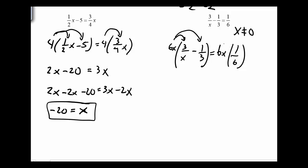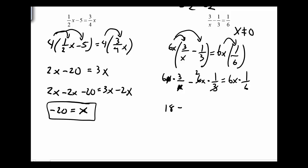When I distribute: 6x times 3 over x — the x's divide out — and I'm left with 6 times 3, which is 18. Then 6x times 1 over 6: 3 divides into 6 twice, and two times 1 gives me 2x. And over here on the right side, the 6s divide out and I'm left with just x. At this point, I want to add 2x to both sides, which gives me 18 equals 3x.